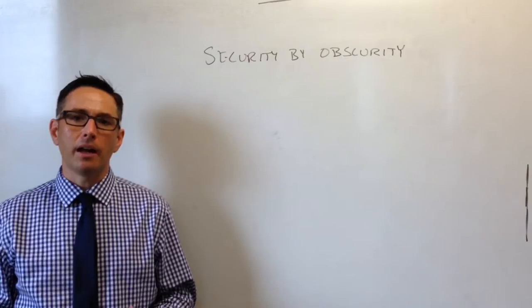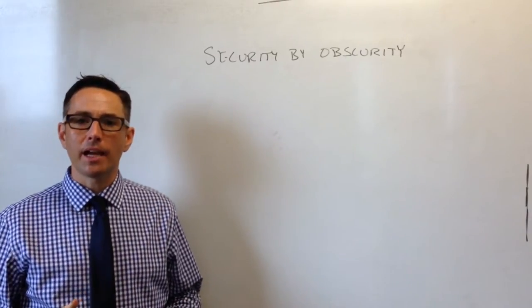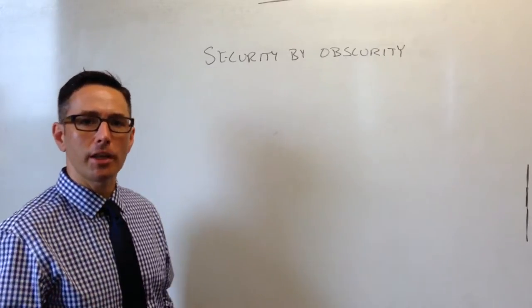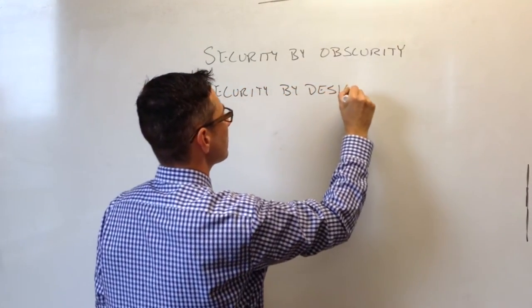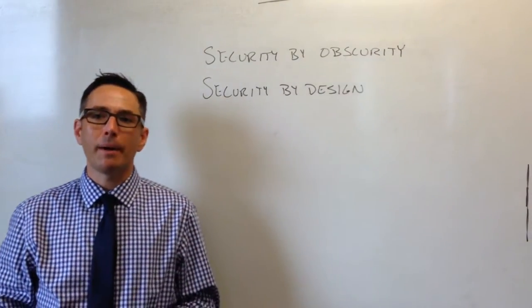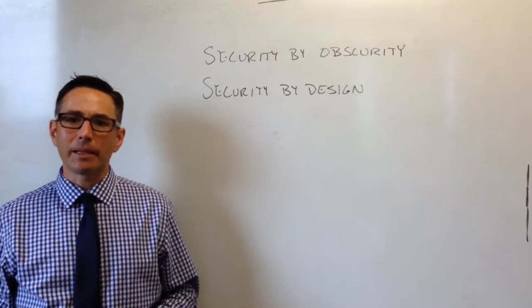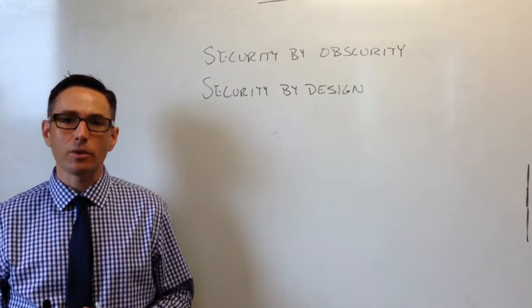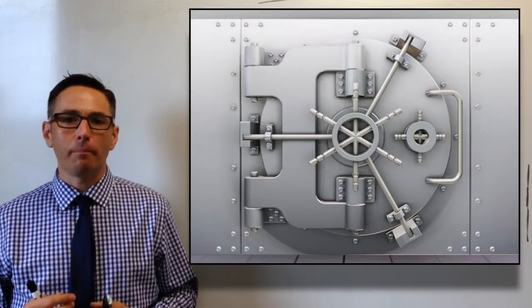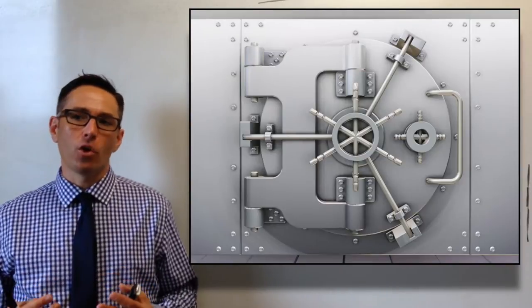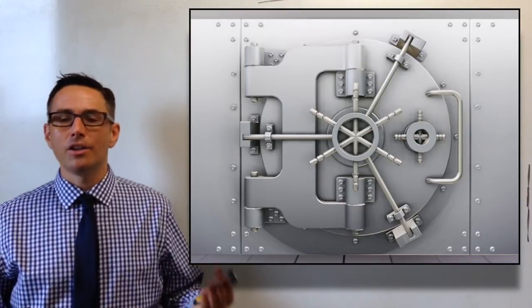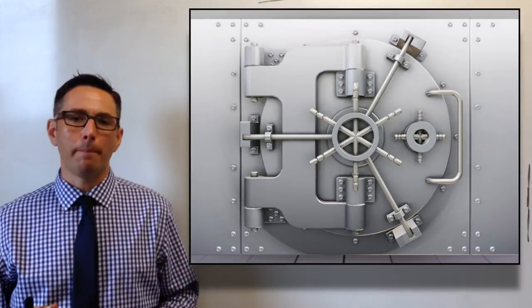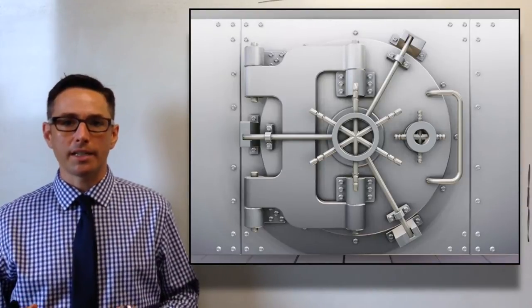Another way that you could imagine securing valuables is called security by design. The principle behind security by design is that you're not relying on the fact that something is hidden to keep it safe. An analogy for this would be a bank vault. When you imagine a bank vault or safe deposit boxes at a bank, you imagine an enormous door that's probably 12 inches of steel, bulletproof, with a very complicated combination lock. You probably have to bring in two or three people who each know a portion of the password or combination to get that money.